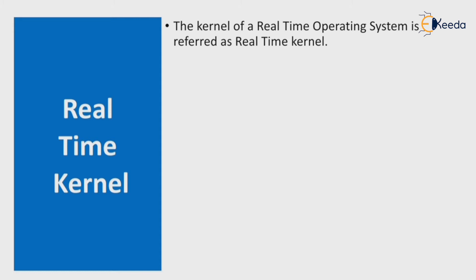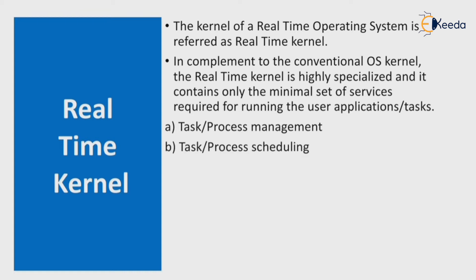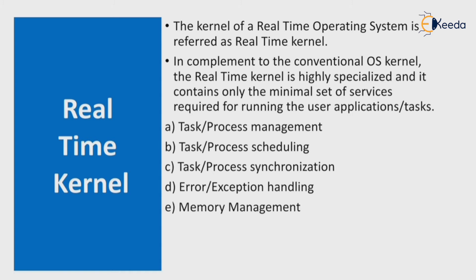The third type is the real-time kernel. The kernel of a real-time operating system is referred to as a real-time kernel. In contrast to the conventional OS kernel, the real-time kernel is highly specialized and contains only the minimal set of services required for running the user application or task. Services include task or process management, task or process scheduling, task or process synchronization, error or exception handling, memory management, interrupt handling, and time management.